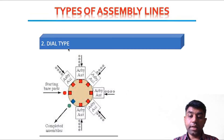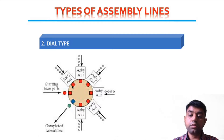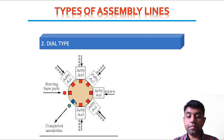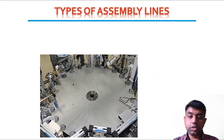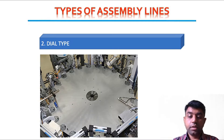The second type is the dial type, whose appearance is very similar to a watch dial. A base component arrives from one end, gets assembled at one unit, then moves in a dial pattern where more components are added, and it exits as a complete assembly. In this real view of the dial type, different machines are arranged in a dial form — components arrive at one end, are processed at different machine units, and exit as a complete assembled part.